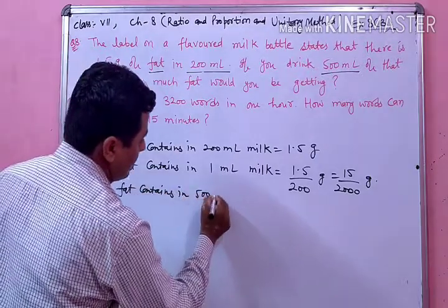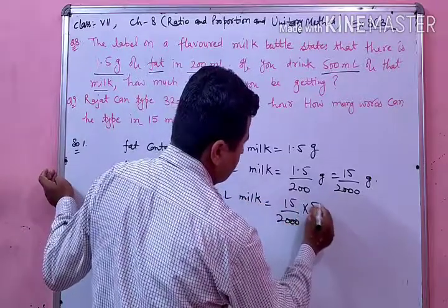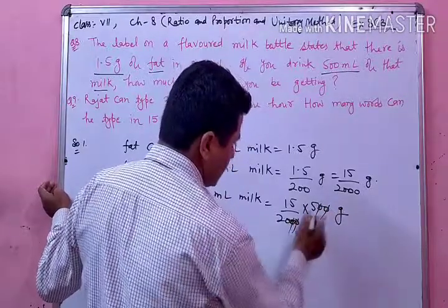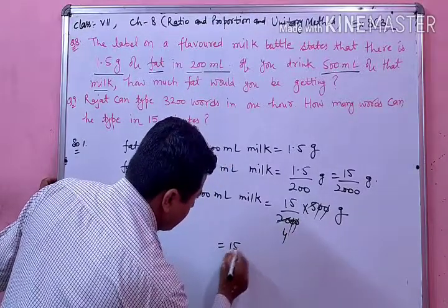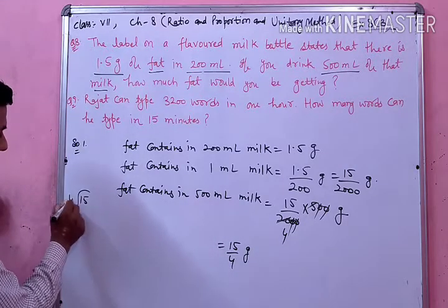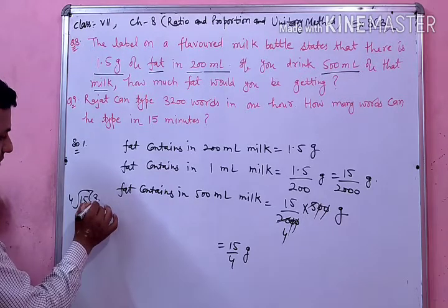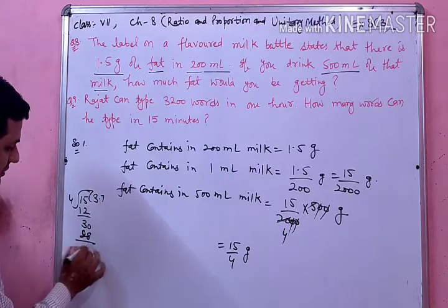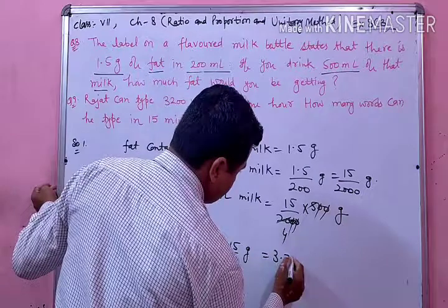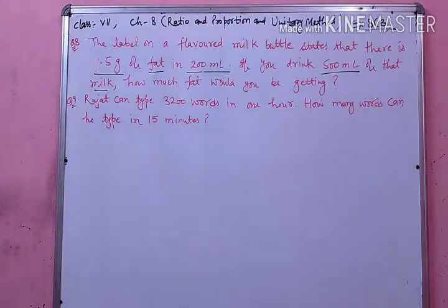Fat contains in 500 milliliter milk — 15 upon 2000 की multiply करेंगे 500 से। 2-0 से 2-0 cut हो चुकी है, तो 15 × 5 upon 4 = 15/4 gram. और इसको decimal form में लिखें तो 3.75 gram. इस तरह से question number 8 complete हो चुका है। अब देखिए next question.